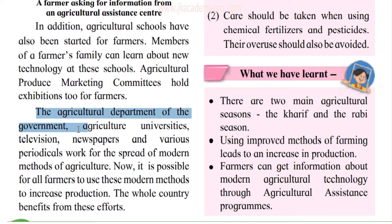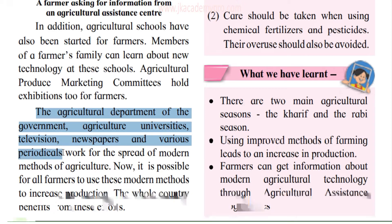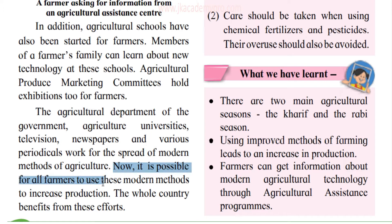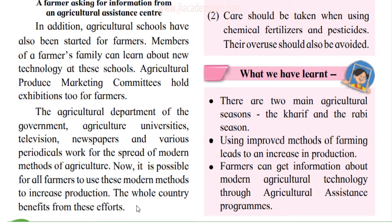The agricultural department of the government, agricultural universities, television, newspapers, and various periodicals — periodicals are magazines or small newspapers which come out maybe once or twice a week — all work for the spread of modern methods of agriculture. It is now possible for all farmers to use modern methods and increase production so the whole country can benefit. Nowadays farmers get a lot of information even through the internet, radio, and television, and the whole country is benefited because of the efforts of the farmers.